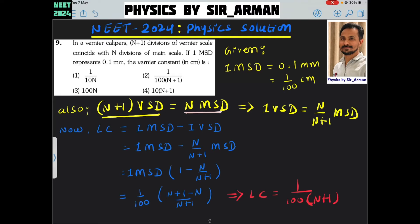So, what will be the value of 1 vernier scale division? If you just take this towards the right side, you will get: 1 vernier scale division equals n by n plus 1 of the main scale division.